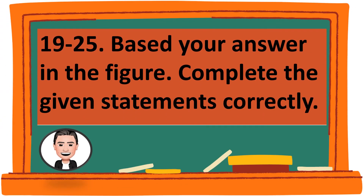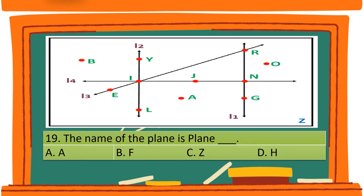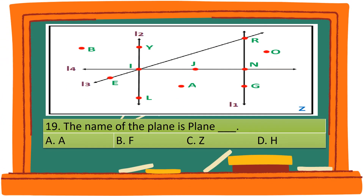Questions 19 to 25 — base your answers on the figure. Question 19. The name of the plane is plane blank. A. A. B. F. C. Z. D. H. The correct answer is C. Z.